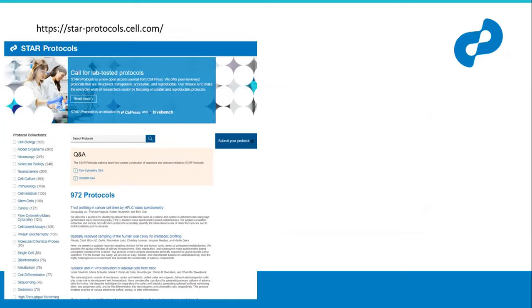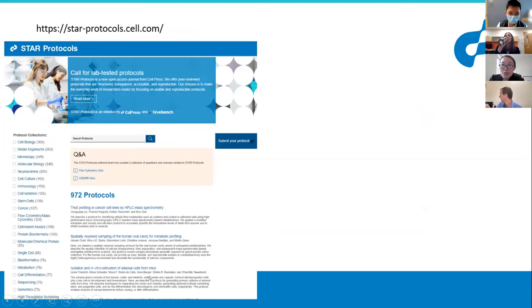Star Protocols is an open access peer-reviewed Cell Press journal and we launched in 2019. If you go to our website at starprotocols.cell.com, you can see the index page, where so far we have about 972 protocols.